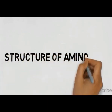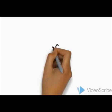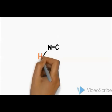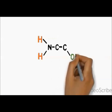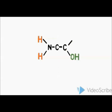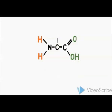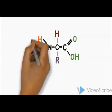The structure of an amino acid has two functional groups. The first functional group is the amino group and the second functional group is the carboxyl group. Another atom that binds to the central carbon is hydrogen, and there is also an R group — each amino acid has a different R group.